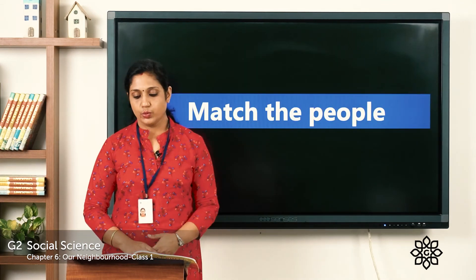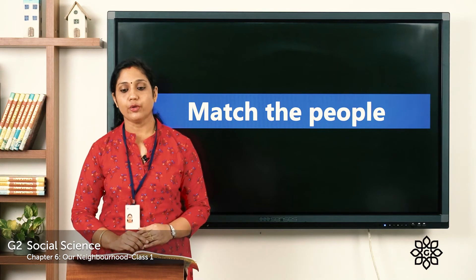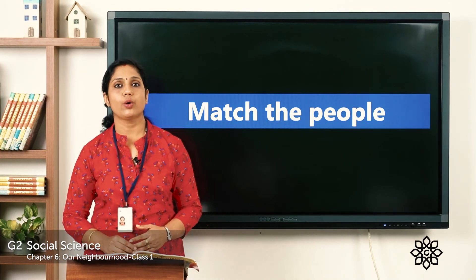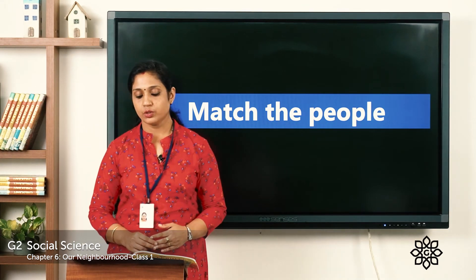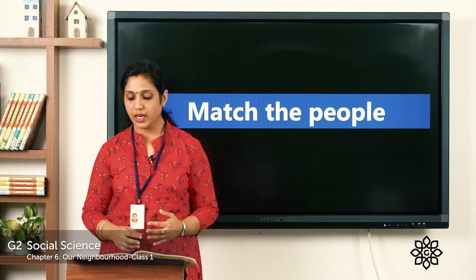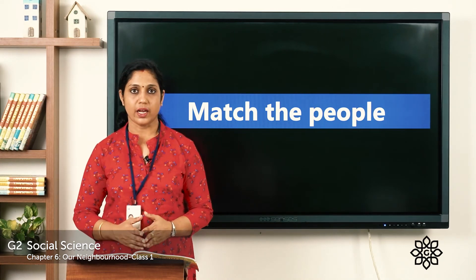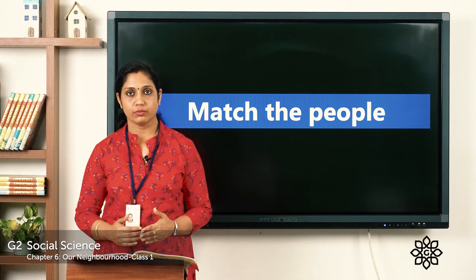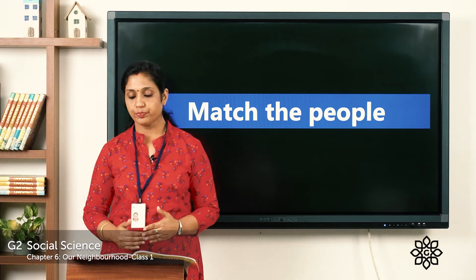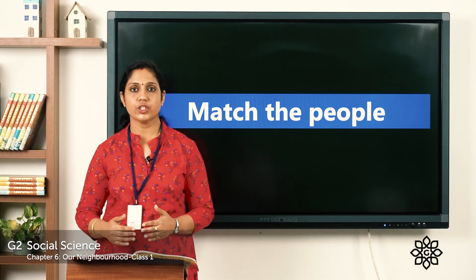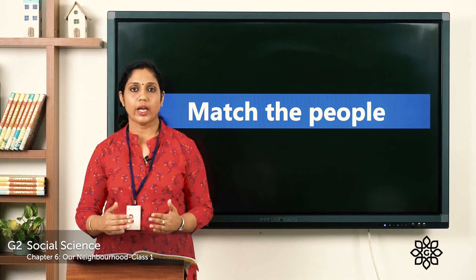Next we have to match the people given in row A with the vehicles given in row B. In row A you can see a doctor, fireman, and a policeman. In row B you can see a police jeep, ambulance, and a fire engine. Match row A with row B.